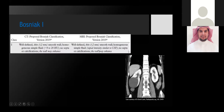Moving on to the Bosniak classification itself. Bosniak 1 is the simplest category. As shown in the image, this is a simple large cyst within the right lower pole. It has a thin wall — two millimeters or less — with homogeneous simple fluid between -9 to 20 Hounsfield units. There are no septa, no calcification, and minimal enhancement of the wall is still acceptable as Bosniak 1.